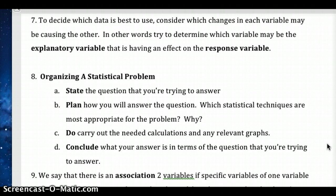A huge focus this year is how we organize problems. These four steps—state, plan, do, and conclude—will be used for the remainder of the year when solving statistical problems. First, state the question we're trying to answer to be clear about what we're doing and allow objective evaluation. Second, plan how to answer the question. Will you find a Z score? Use the T table? What statistical techniques are most appropriate, and why? This doesn't need to be involved—just identify the technique and briefly explain. Third, do: carry out needed calculations and create relevant graphs to show your work. Finally, conclude.